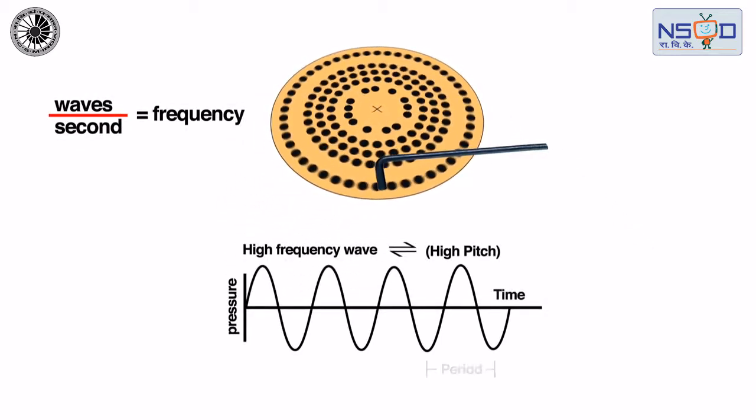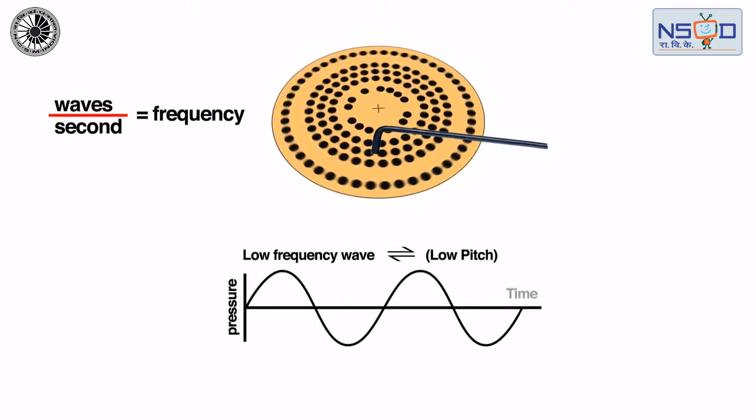As we move forward, frequency of crossing hole decreases and vice versa.